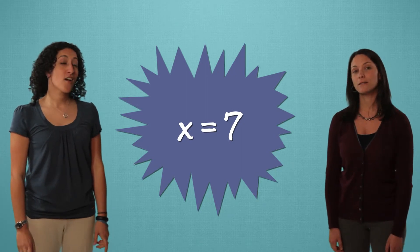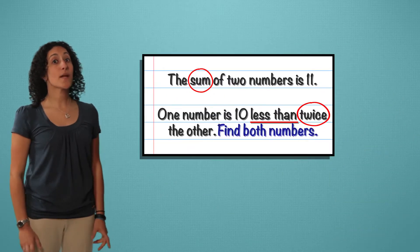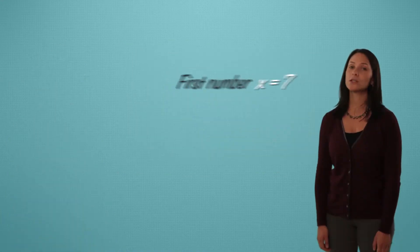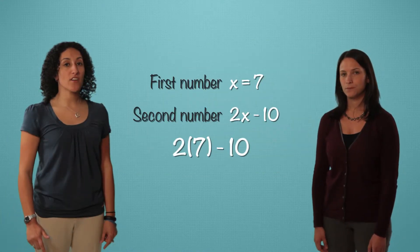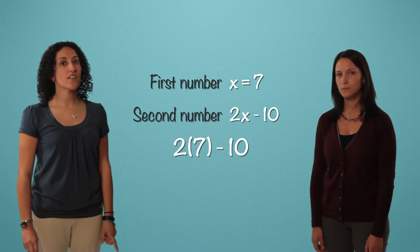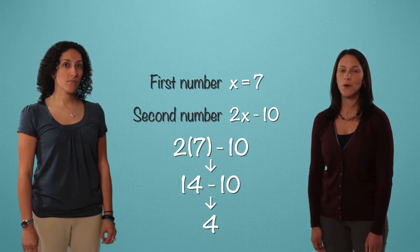But we aren't done yet. Look back at the word problem. Find both numbers. 7 is one number, and the other is 2x minus 10. We substitute 7 in for x. 2 times 7 equals 14. And 14 minus 10 equals 4.